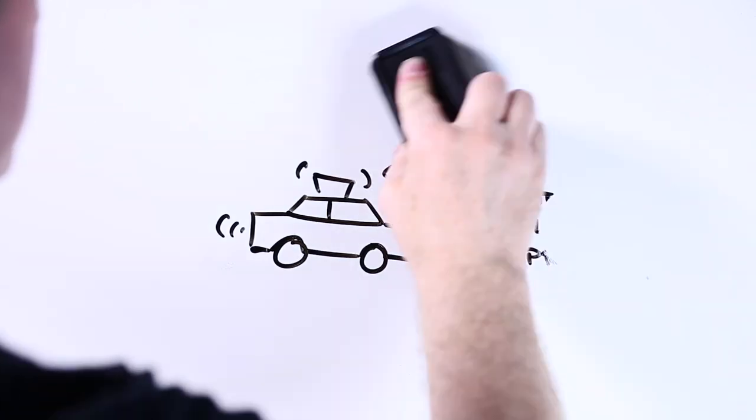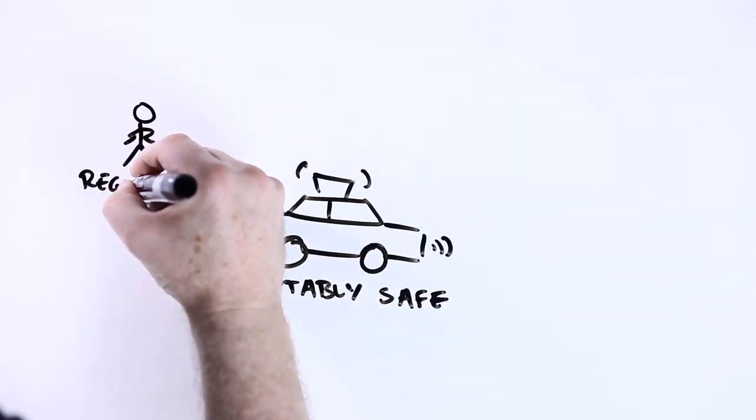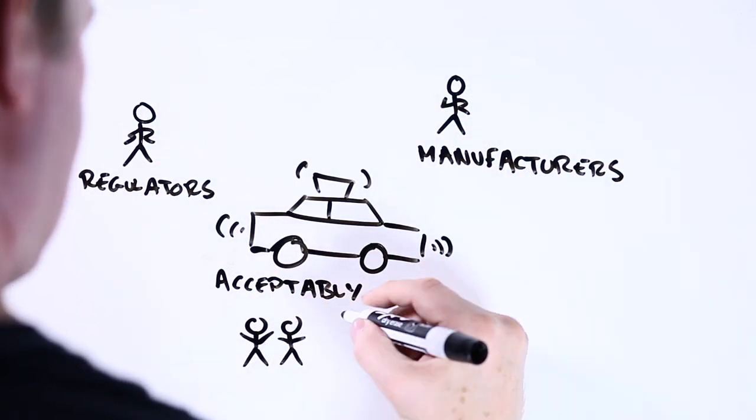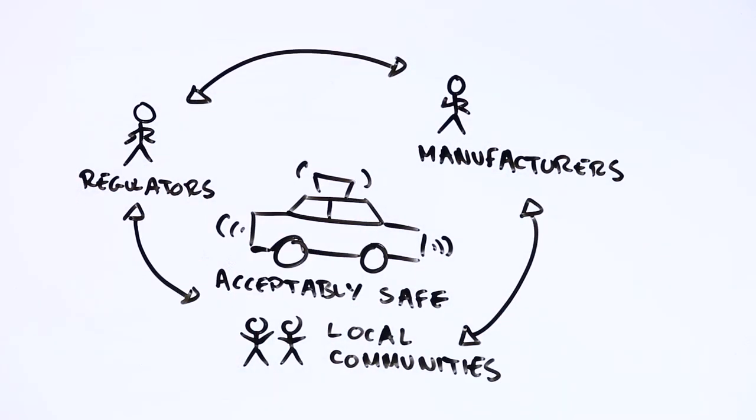But on the way there will inevitably be crashes. And this is where regulators and manufacturers need to start working with local communities so that they can work together on what being acceptably safe actually means.